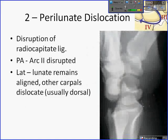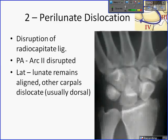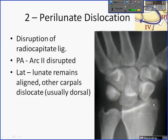The second stage of lesser arc injury involves perilunate dislocation, with disruption of the radiocapitate ligament. On the lateral view, the carpus is evidently dislocated dorsally — it's almost always dorsal rather than volar. The lunate remains aligned with the radius. On the PA radiograph, the second carpal arc is disrupted and cannot be drawn, suggesting the diagnosis. Importantly, these injuries occur sequentially: when you have a stage two injury, you'll also have a stage one injury, so the scapholunate interval will be widened.